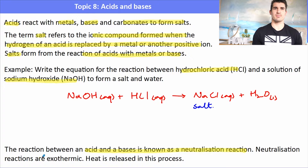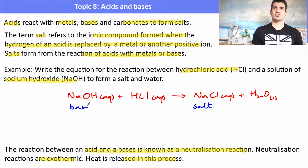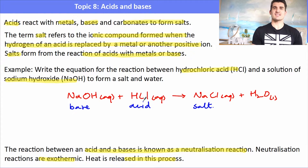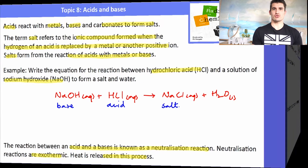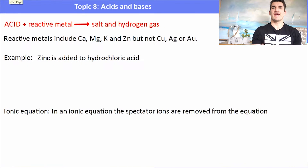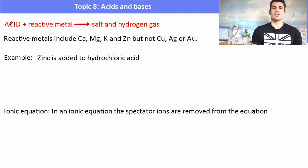This type of reaction — acid plus a base — is defined as a neutralization reaction. Neutralization reactions are said to be exothermic, meaning they release heat. So any acid-base reaction can be classified as neutralization, and it releases energy — the temperature of the solution will increase.